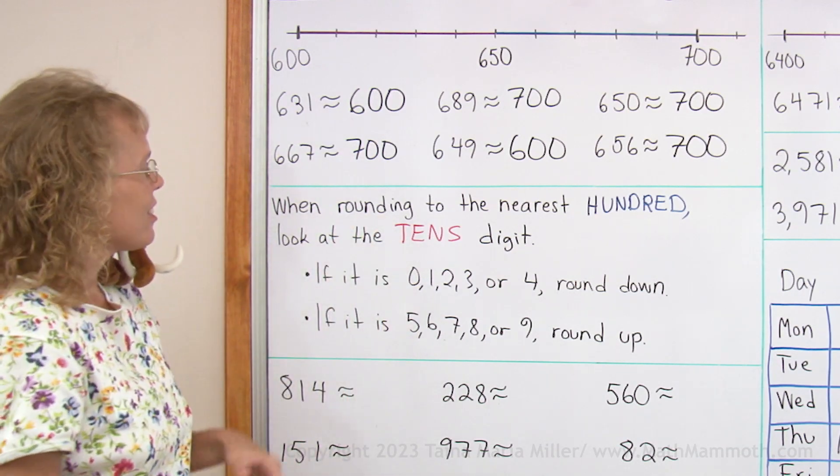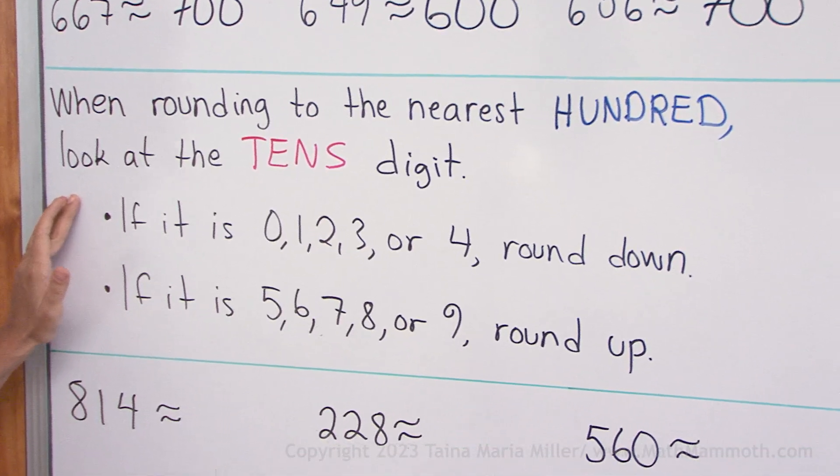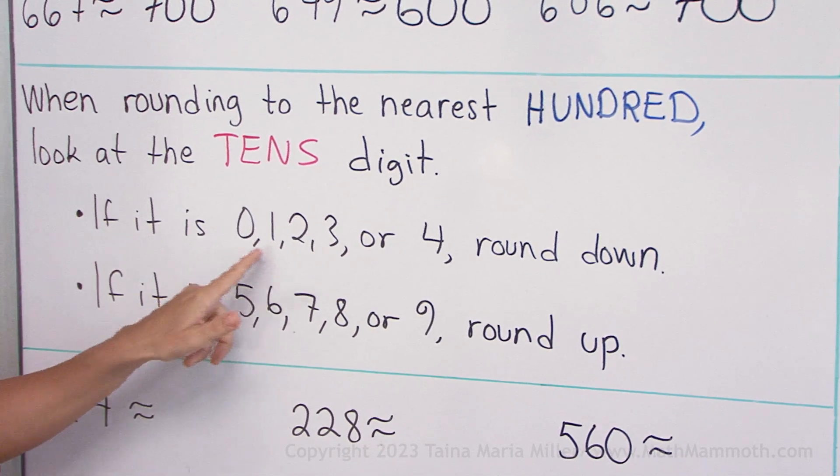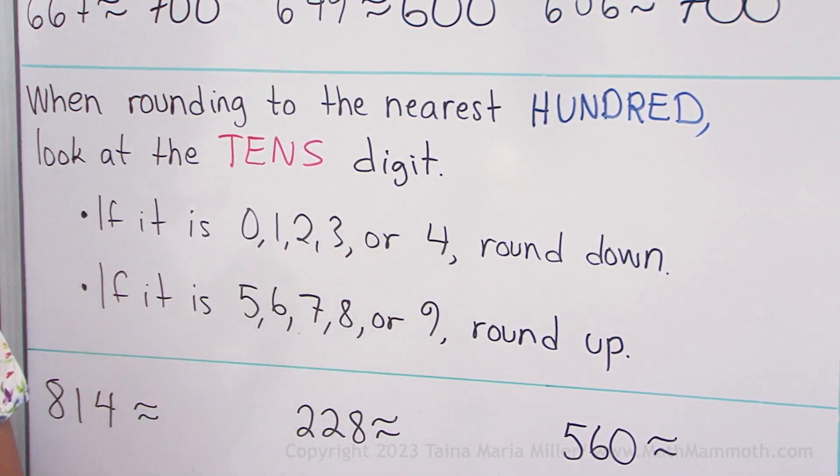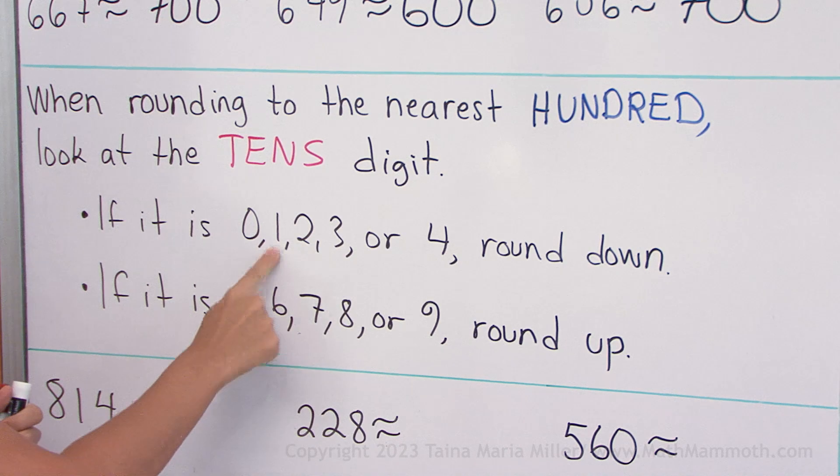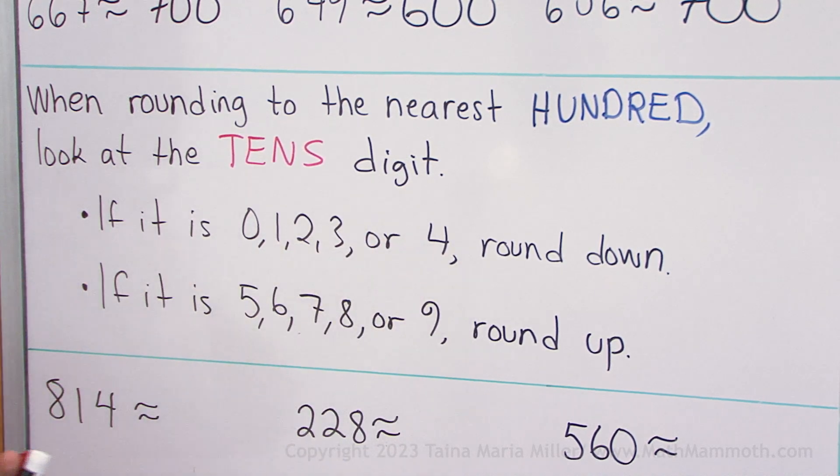So when you're rounding to the nearest hundred, look at the tens digit. If the tens digit is 0, 1, 2, 3, or 4, it means that the number would have 10, or 20, or 30, or 40 something, right? Then you round down to the previous hundred.